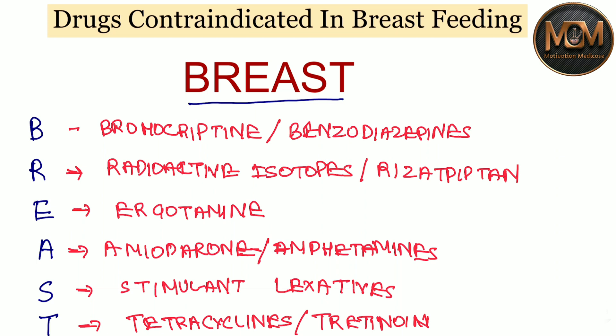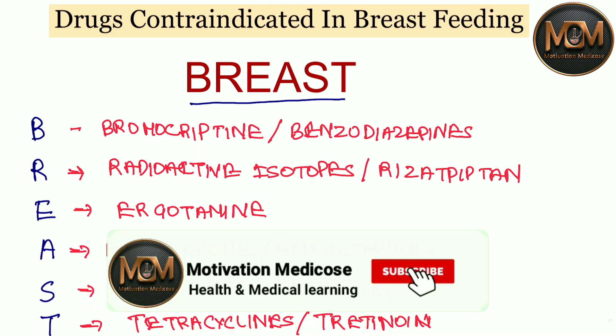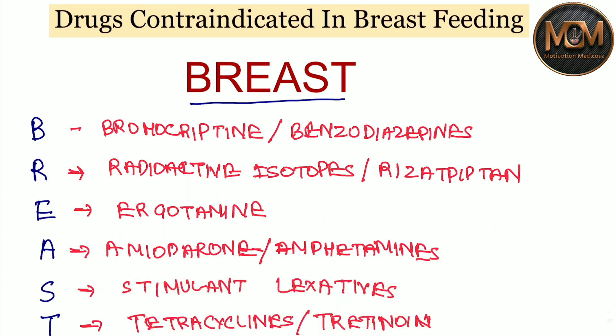With the help of the BREAST mnemonic, you can easily learn the names of these drugs. B: Bromocryptine and Benzodiazepines. R: Radioactive isotopes or Rizatriptan. E: Ergotamine. A: Amiodarone or Amphetamines. S: Stimulant laxatives. T: Tetracyclines or Tretinoin. A very interesting mnemonic — BREAST itself. I hope this video has given you a good understanding. Thanks for watching.